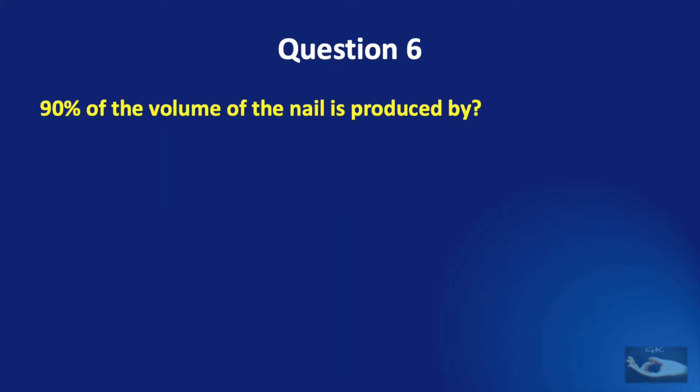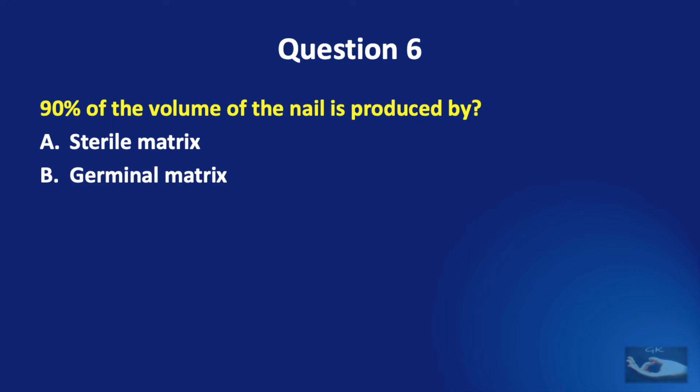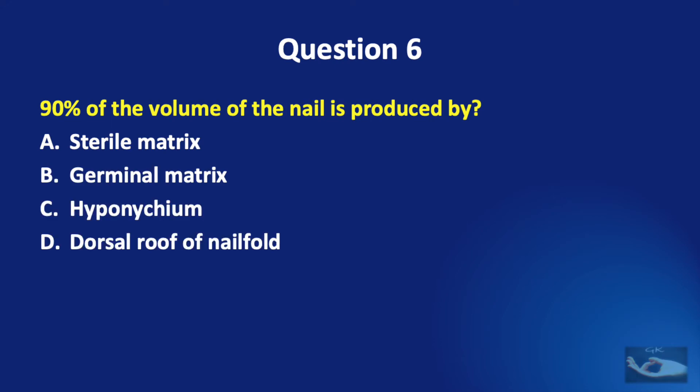Question number six. 90% of the volume of the nail is produced by: sterile matrix, germinal matrix, hyponychium, or dorsal roof of nail fold?